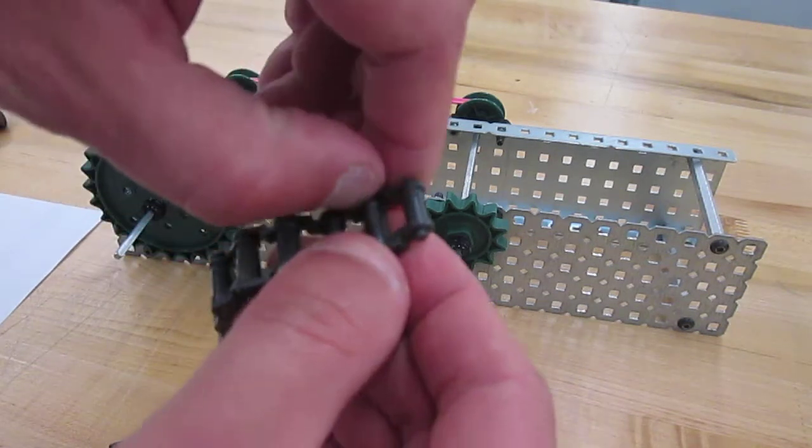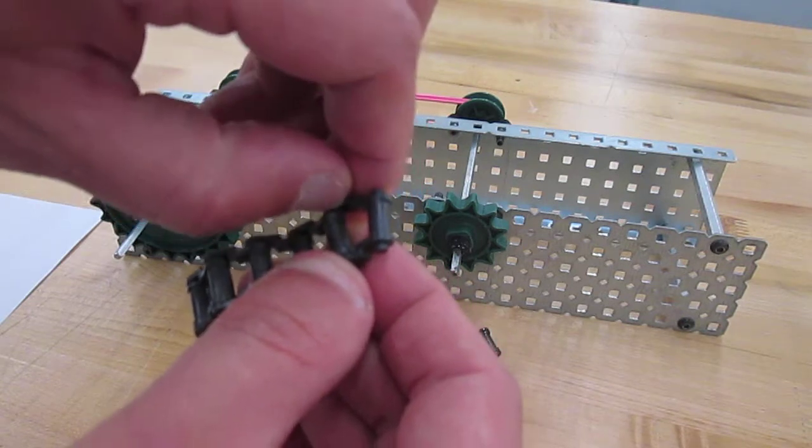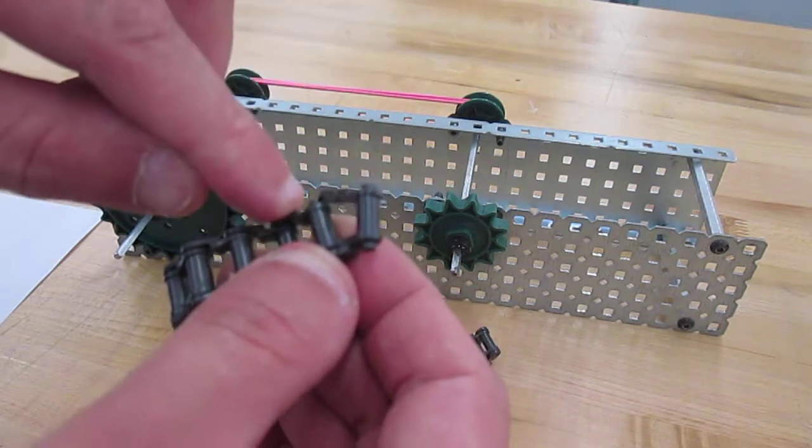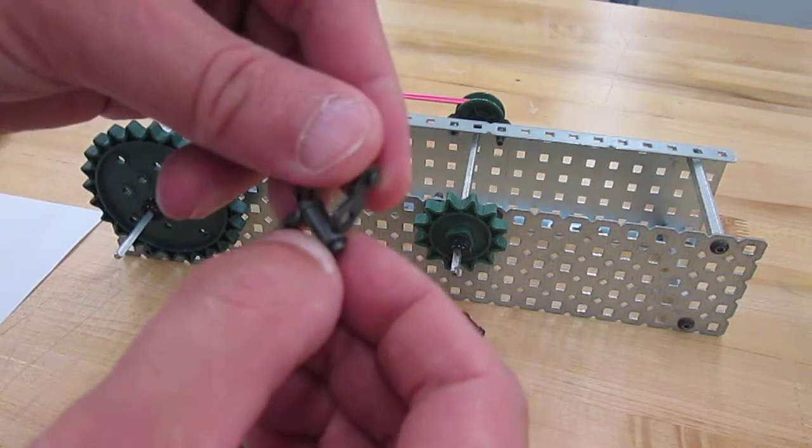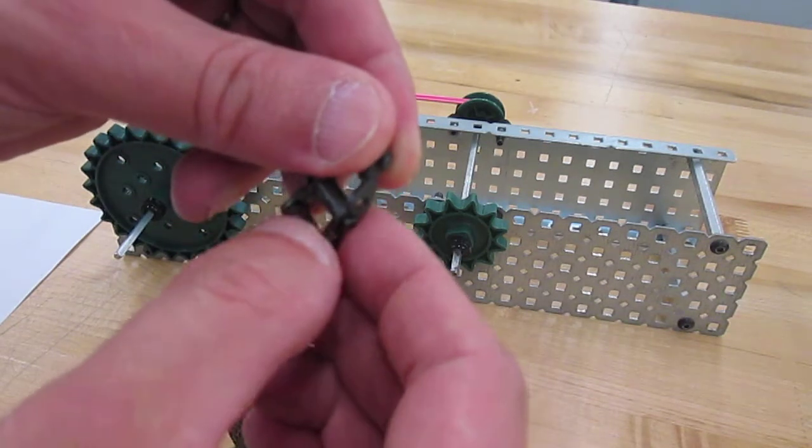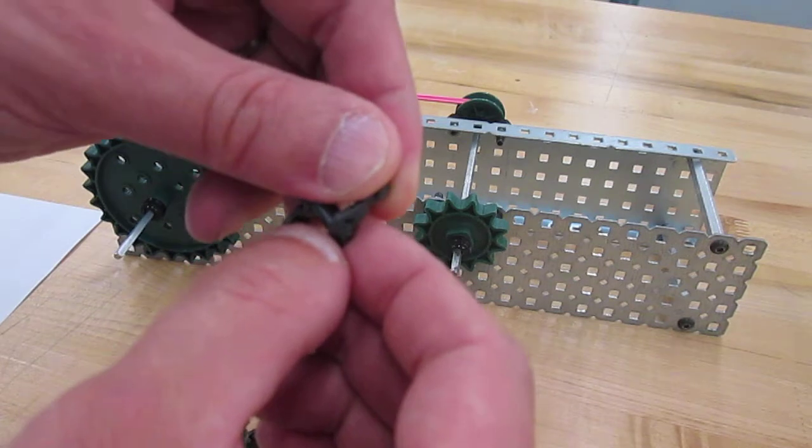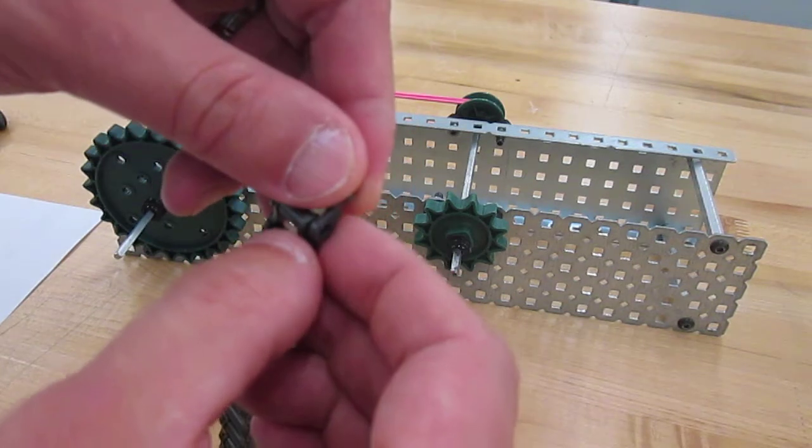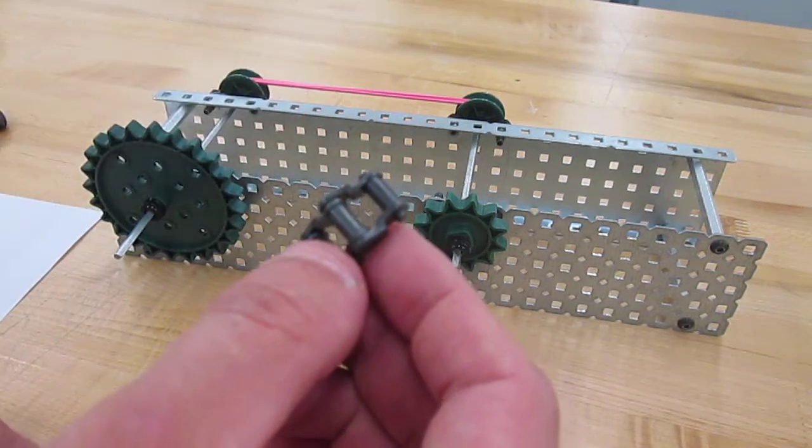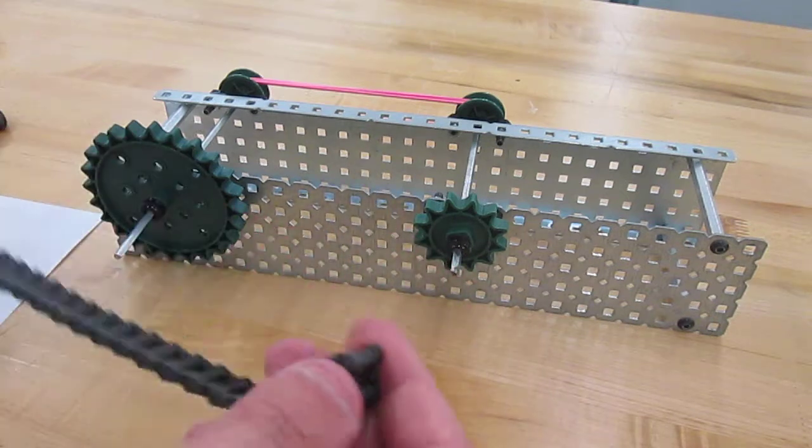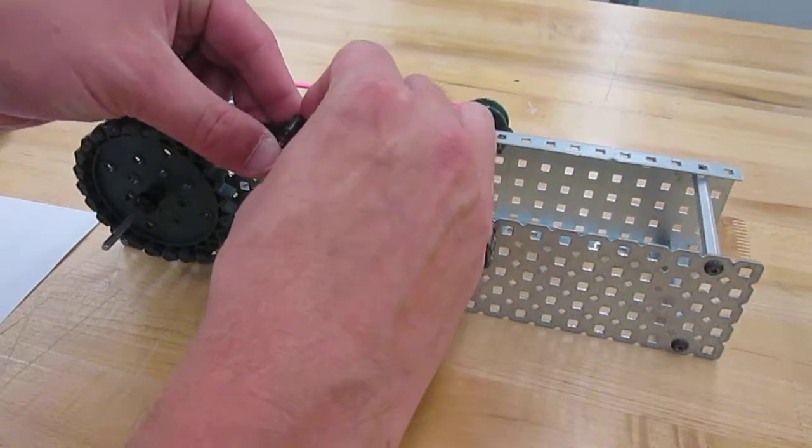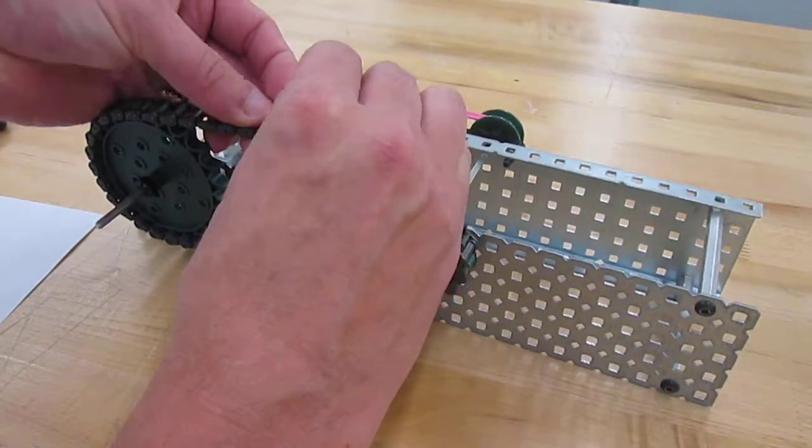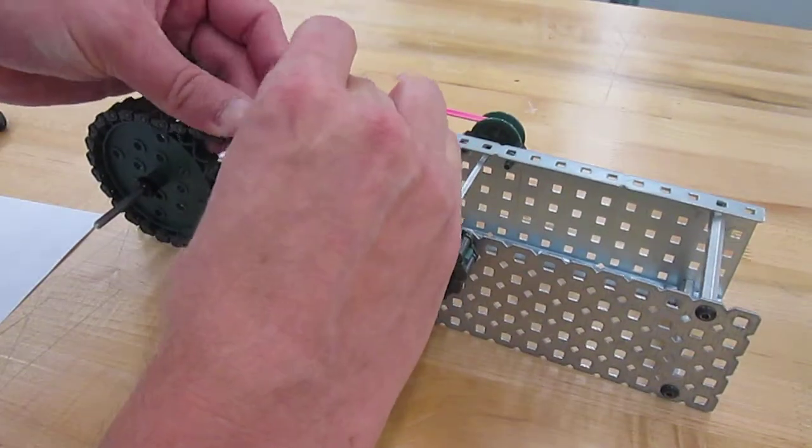The way you separate this is you simply take your fingernail and you put it in between the links and then you slowly slide it apart like that. And then when you put it back together, you put one end in and you slide the other end over until it snaps in place. And then we can wrap that around the outside and reattach the chain.